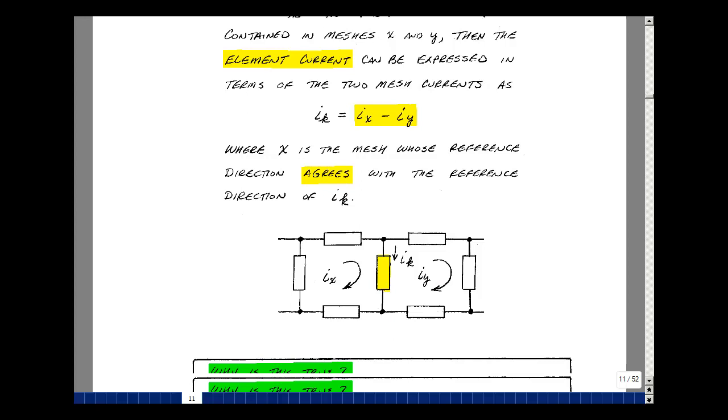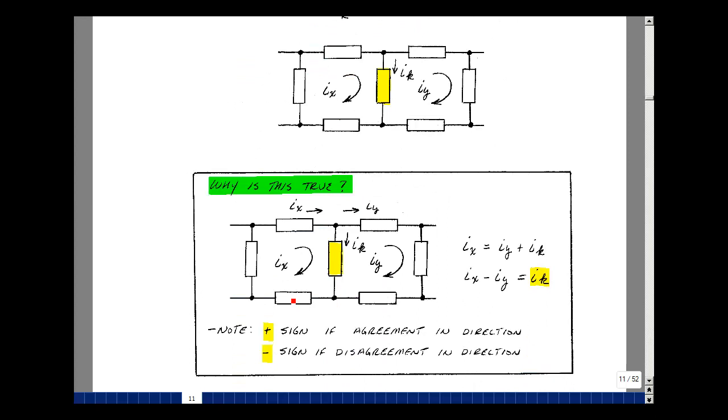Now, why is this true? Well, in this example, i_x is the current in the element up here, and the current i_y is the current in this element up here. So doing Kirchhoff's current law at this node, i_x enters and i_k and i_y leave. So it's the sum of those two. Whatever enters leaves a node. Now let's just solve for the current i_k. Bring the i_y to this side of the equation, and I'm left that i_k is equal to i_x minus i_y.